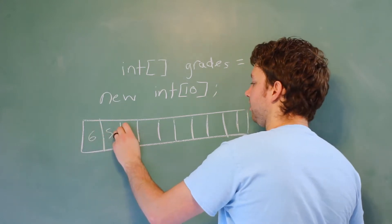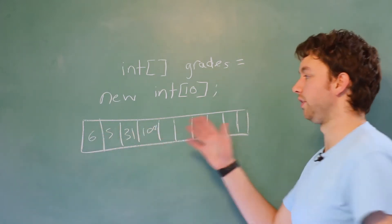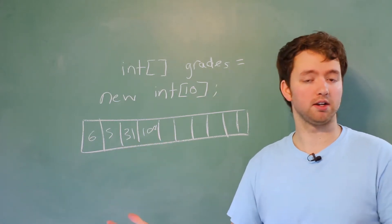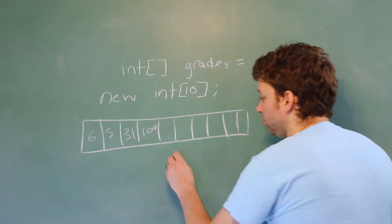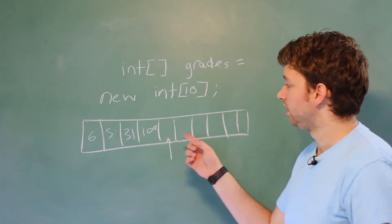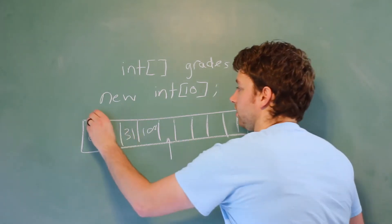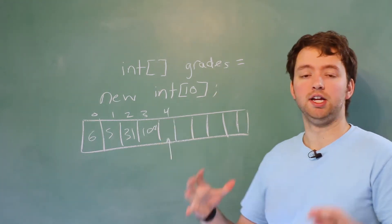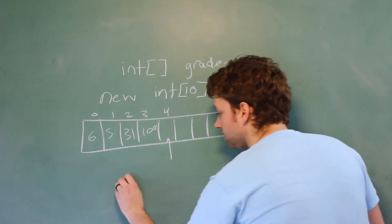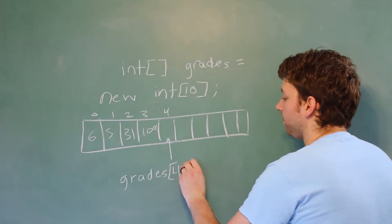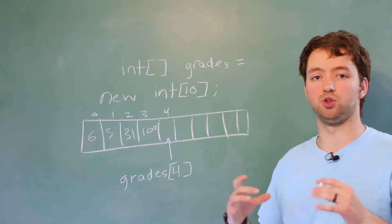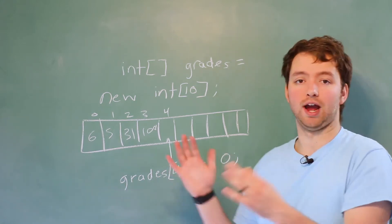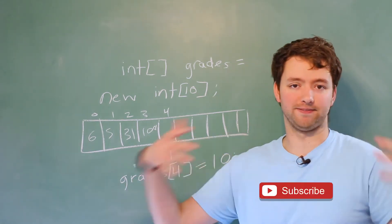It's going to look something like this — each spot is going to contain an element. What kind of element? An integer. So for example you could have six, five, 31, 100, and so forth. Now each spot is also going to have what's known as an index — it's basically a way to reference which spot we're talking about. The indexes start at zero, so it's going to go zero, one, two, three, four. Index four would refer to right here. The way you access that spot is by saying grades, then square brackets four. You can put the index inside the square brackets to refer to a specific position. You can assign a value, or you could use grades index four as an integer, passing it to a method or using it inside of an expression.